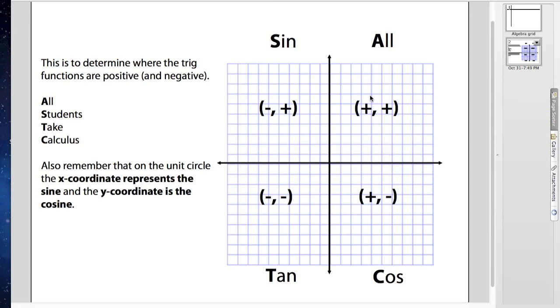This little acronym allows us to determine where my trig functions are positive. So in the first quadrant, naturally, they're all positive. The x and the y, or the cosine and the sine, are all positive.